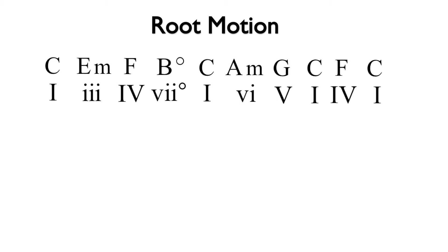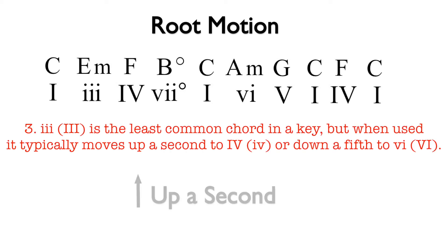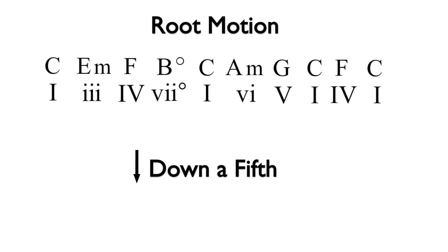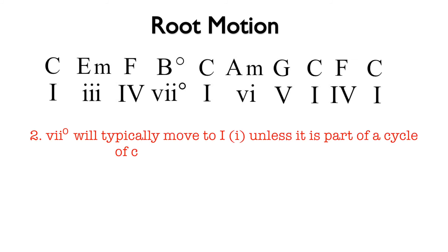I to iii is an uncommon root motion of up a third, but it is possible because any chord can follow I. iii commonly moves to IV, which is up a second root motion. From IV, we move down a fifth to vii diminished, and vii diminished typically leads back to I.